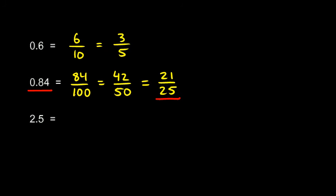Two point five could be written as two and five tenths. And I can reduce the five tenths there to one half. So that's going to be written as two and one half.